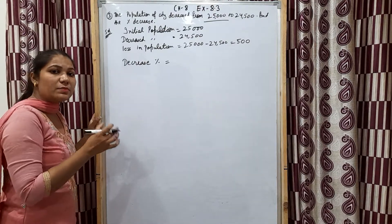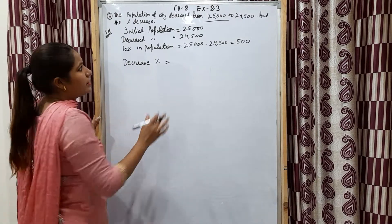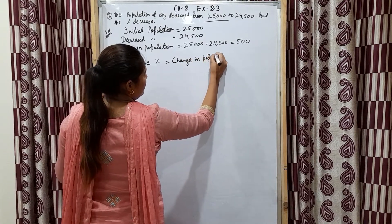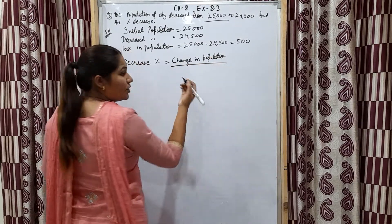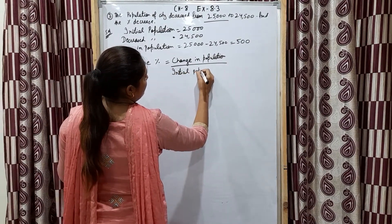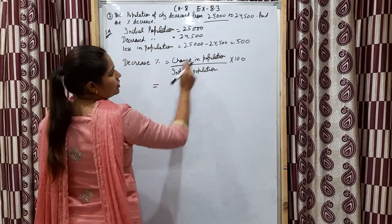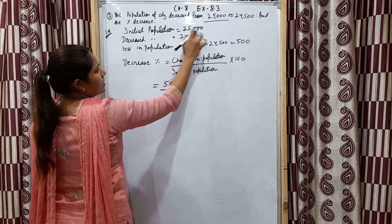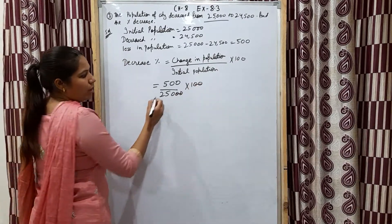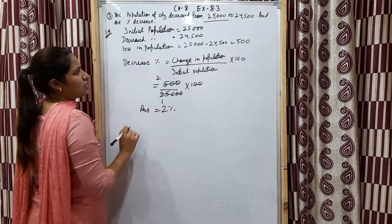So change in population is 500 and initial population is 25,000. 500 upon 25,000 multiplied by 100 — cancel two zeros each side, on the table of 250: 250 twos are 500 — gives 2 percent. So the decrease in population is 2 percent.